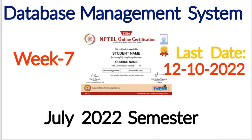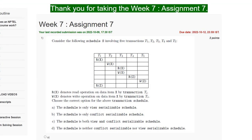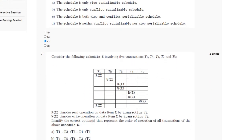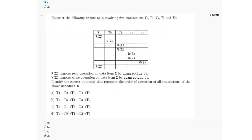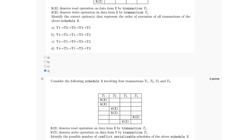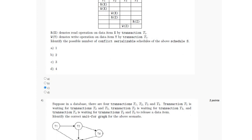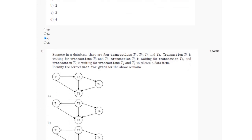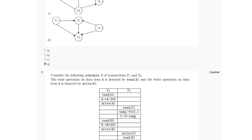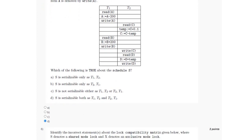For the first question, the answer is option C. For the second question, the answer is option D. For the third question, the answer is option C. For the fourth question, the answer is option D. For the fifth question, the answer is option D.